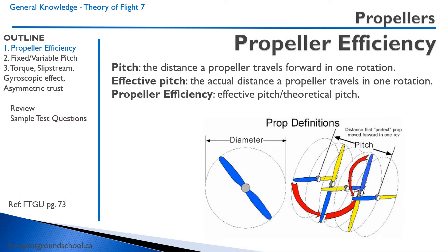When we talk about propellers, there are often two parameters used to describe one. The first is the diameter, let's say 74 inch. The second is the pitch, which is the distance the propeller travels forward in one rotation. This is a theoretical construct. We also have the effective pitch, which is the actual distance the propeller travels in one rotation. Propeller efficiency is the effective pitch divided by the theoretical pitch.